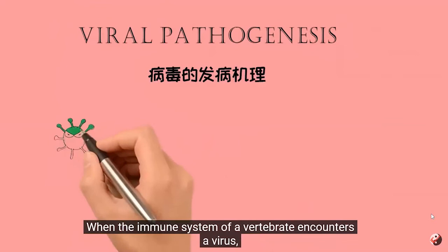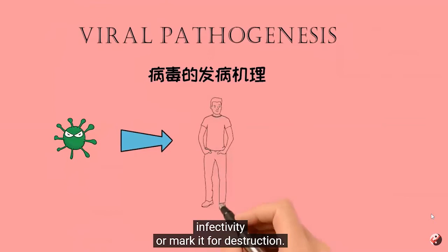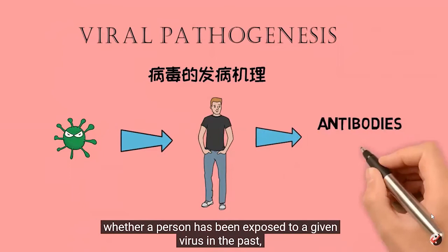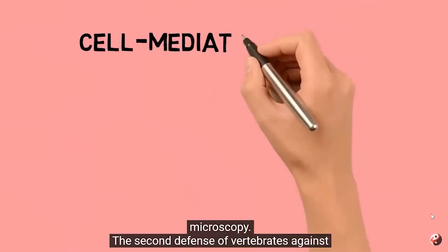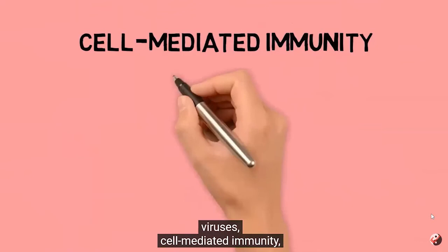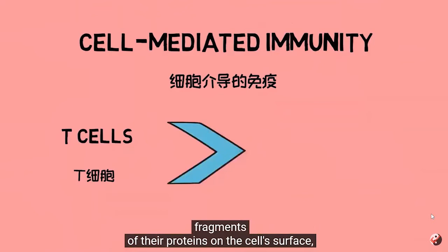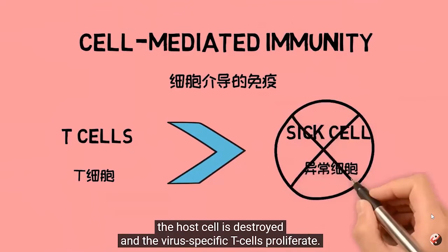When the immune system of a vertebrate encounters a virus, it may produce specific antibodies, which bind to the virus and neutralize its infectivity or mark it for destruction. Antibody presence in blood serum is often used to determine whether a person has been exposed to a given virus in the past. Monoclonal antibodies specific to the virus are also used for detection, as in fluorescence microscopy. The second defense of vertebrates against viruses is cell-mediated immunity, involving immune cells known as T cells. The body cells constantly display short fragments of their proteins on the cell's surface, and if a T cell recognizes a suspicious viral fragment there, the host cell is destroyed and the virus-specific T cells proliferate. This mechanism is jump-started by certain vaccinations.